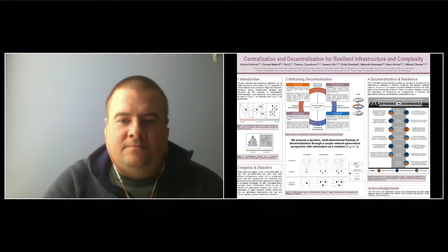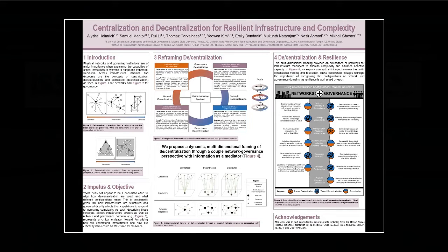My name is Alicia Helmrich and I'm a PhD candidate in the school of sustainable engineering and the built environment at Arizona State University. This project, 'Centralization and Decentralization for Resilient Infrastructure and Complexity,' poster number 176, was a group effort of Dr. Mike Chester's lab during our weekly brown bag meetings over the course of the past year. Basically, we were having conversations and realized that infrastructure literature we were each reading was using concepts of centralization and decentralization in numerous ways — at times referring to the physical networks and at others, institutional governance. Furthermore, it was infrequently defined. We set out to understand how the concepts are referenced in space and explore how centralization and decentralization could potentially increase adaptive capacity so infrastructure, particularly the power, water, and transportation sectors, could better respond to complex environments.